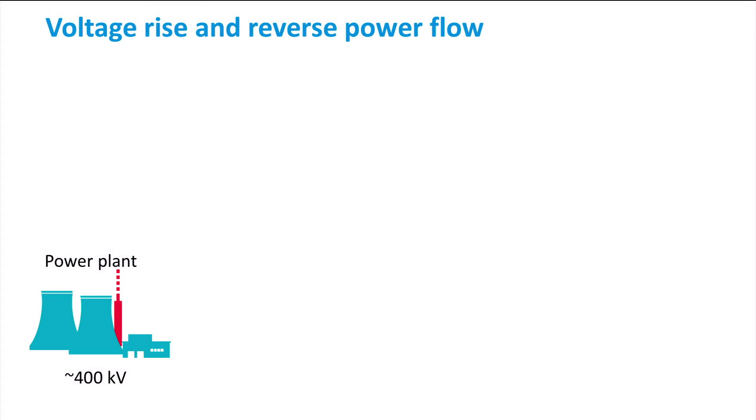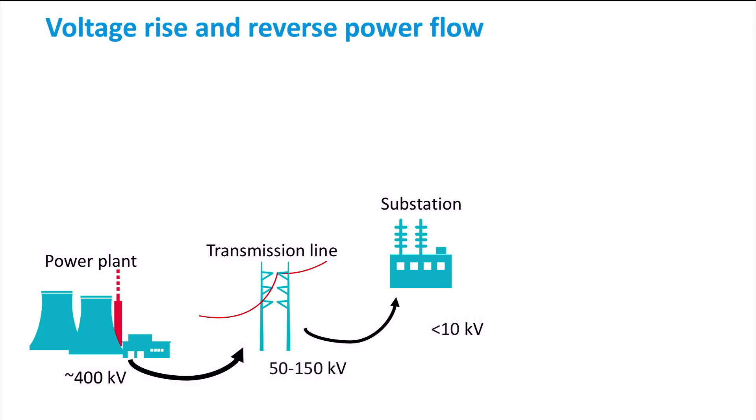Typically, in traditional systems, power plants provide power at 400 kV, which is sent to transmission lines at 50 to 150 kV through step-down transformers. Switchgear substations at around 10 kV are used to redirect the power to either low-voltage distribution grids or factories.